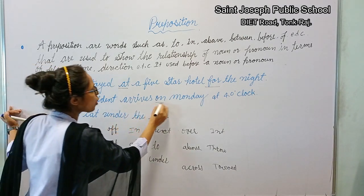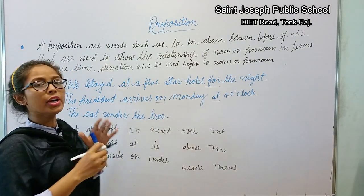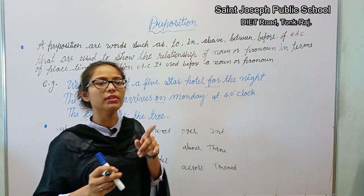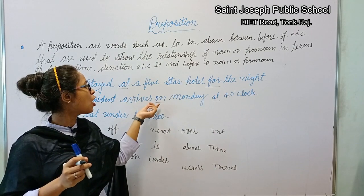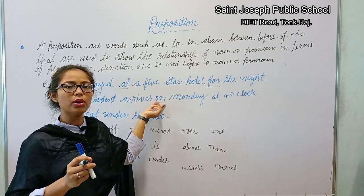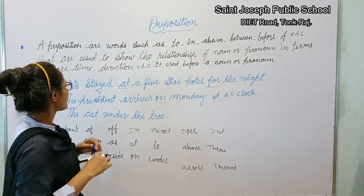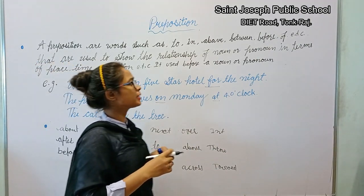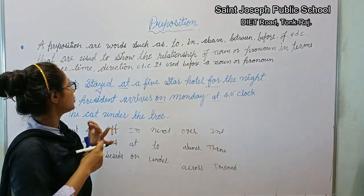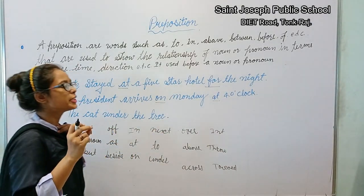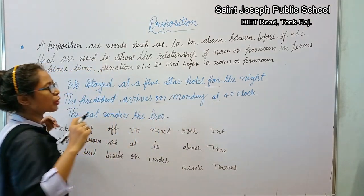Next example: 'The president arrives on Monday at four o'clock.' Before a time we write 'at,' and before days and months we always write 'on.' So 'on' and 'at' are also preposition words. These preposition words are divided according to their use — direction, place, and time.